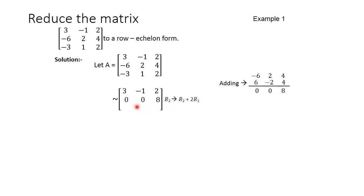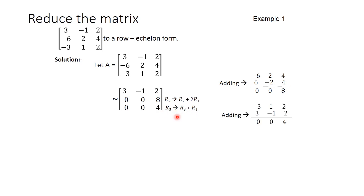Now the third row first element should be zero. We apply the operation R3 → R3 + R1, which gives 0, 0, 4. So we get the matrix [3, -1, 2; 0, 0, 8; 0, 0, 4]. We use the equivalent notation here because this matrix is not equal to the original; it is equivalent after the operations.